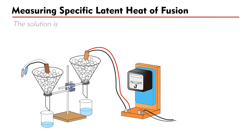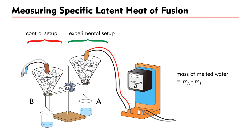The solution is to use two identical setups A and B, both including a funnel that holds the ice and an immersion heater. However, in setup A, which we call the experimental setup, the immersion heater is turned on, while in setup B, which we call the control setup, the heater is turned off. After a while, the beaker in setup A will contain more melted water than that in B. Let MA and MB be the masses of the water collected respectively. The difference MA-MB will be the mass of the water melted by the heater only.